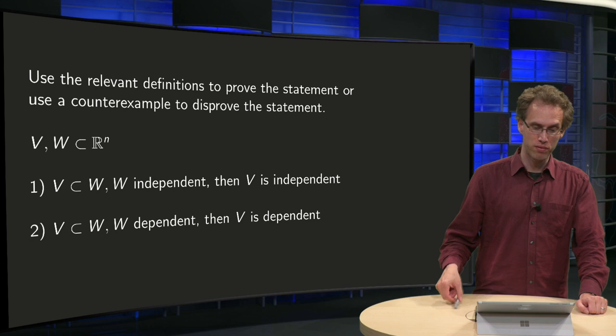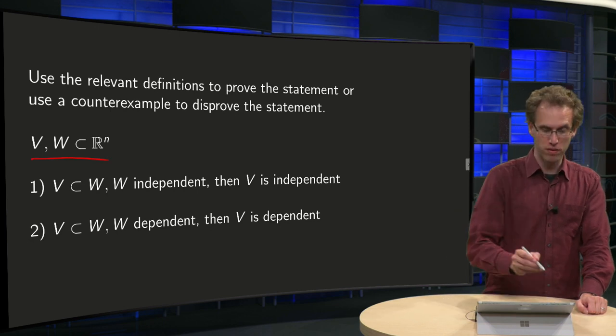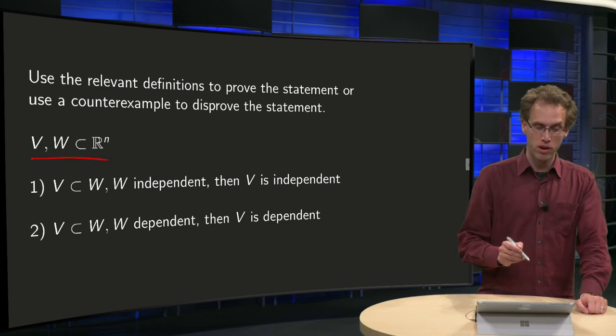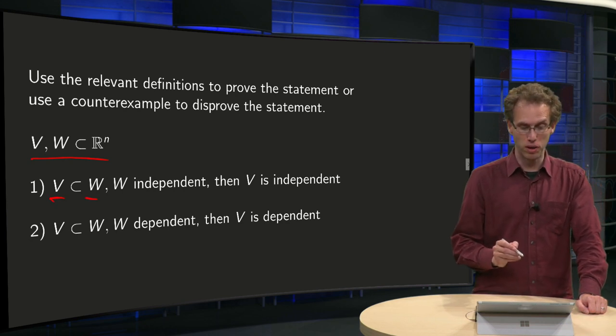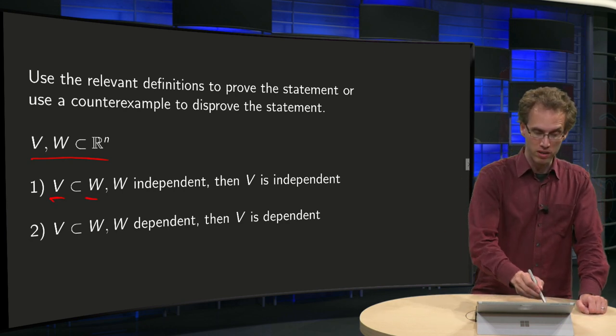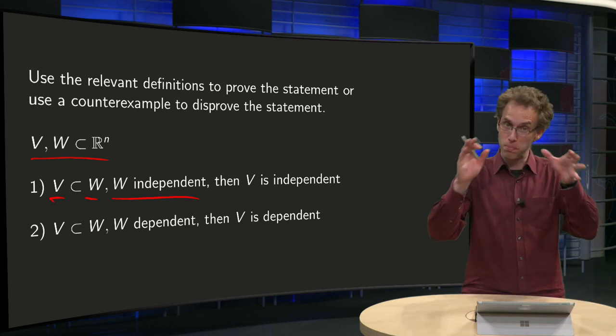So what do we have? We have two subsets of R^n, V and W. First of all, V is a subset of W. We know that W is independent, so the big set is independent,